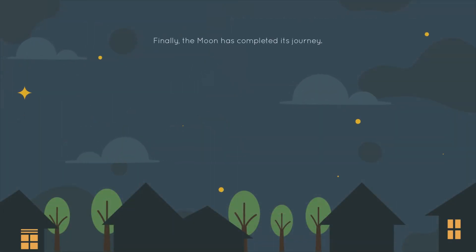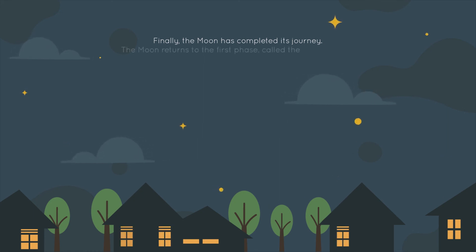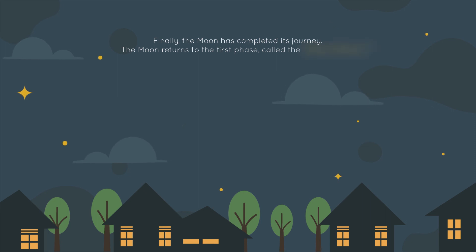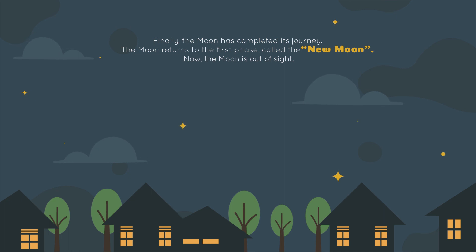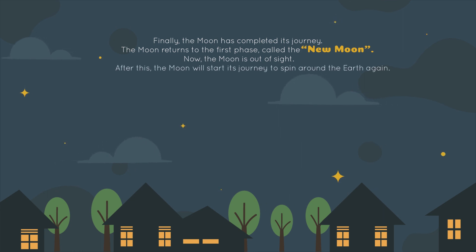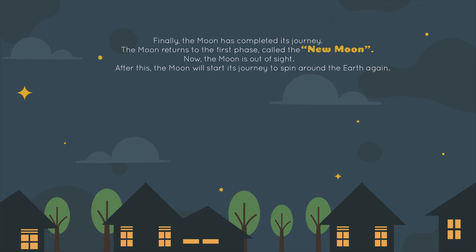Finally, the moon has completed its journey. The moon returns to the first phase, called the new moon. Now the moon is out of sight. After this, the moon will start its journey to spin around the earth again.